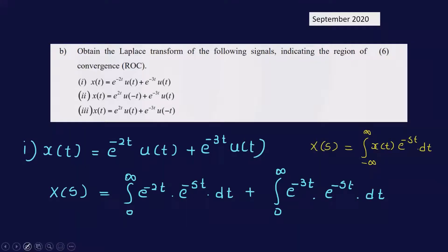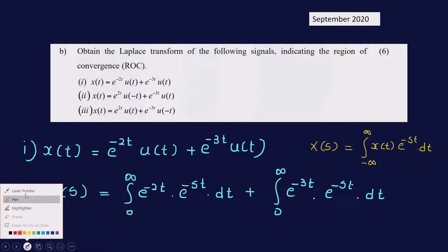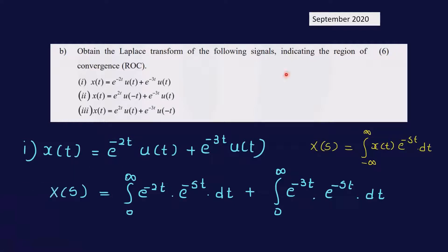Obtain the Laplace transform of the following signals, indicating the region of convergence (ROC). First: x(t) = e^(-2t)u(t) + e^(-3t)u(t).